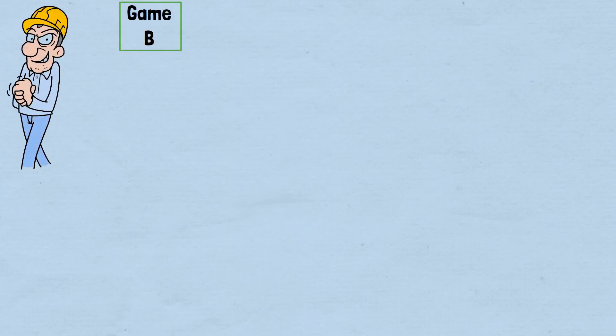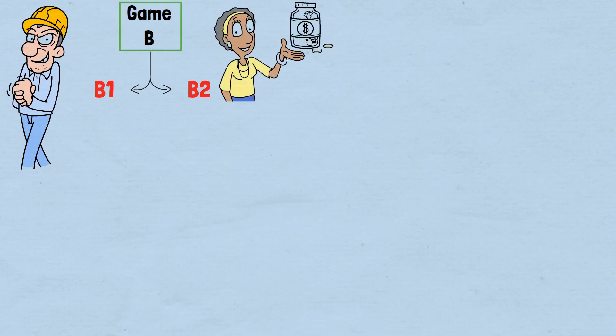Game B appears more sophisticated but is actually more brutal than Game A. This game consists of two sub-games, B1 and B2, and which one you play depends on a seemingly arbitrary rule: the amount of money you currently have. Here's how it works: if your remaining money is a multiple of three—like $93, $81, or $66—you must play B1. If your bankroll is any other amount, you play B2.